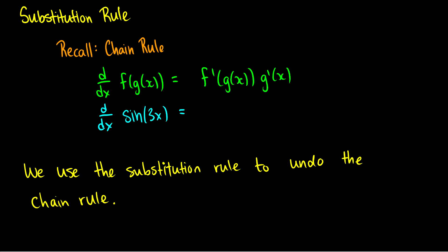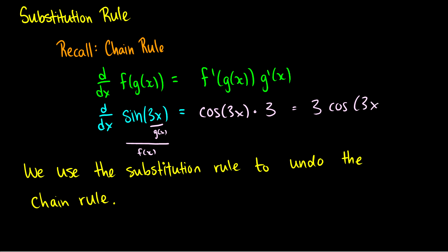Let's do an example. I want to take the derivative of sin(3x). We can see that 3x is our inner function g(x), and sine is our outer function f(x). To take the derivative, first we take the derivative of f with g(x) inside, which gives cos(3x), and then we multiply by the derivative of g(x), the derivative of 3x, which is 3. So the derivative of sin(3x) is 3cos(3x).